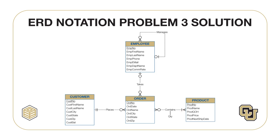For data types: product number should be integer, product name should be varchar, product quantity on hand should be integer, product price should be fixed decimal — that's a decimal data type with two digits to the right of the decimal point — and product next ship date should be date or datetime.